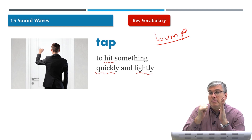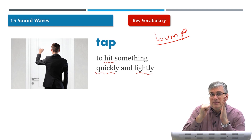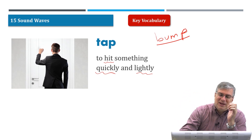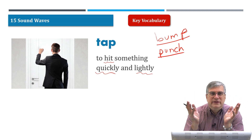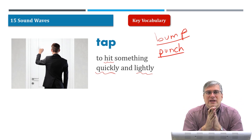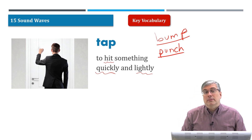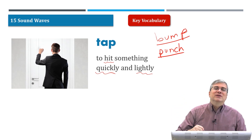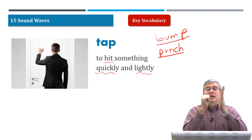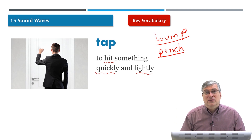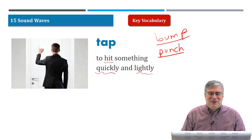If you hit something hard you punch it — punch is another type of hit with more energy. There are many words for different situations. Tap means lightly and quickly. When you go to somebody's door, you don't punch it to get their attention — you tap on it, knock knock. Don't punch the door; you'll hurt your hand and confuse the person inside.